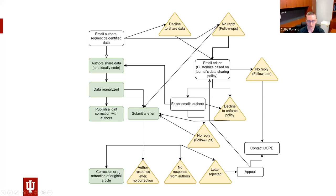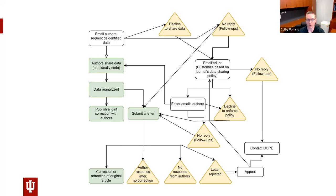Often we run up against barriers. There may be an author response to our letter, but the journal declines to correct the original article. This is not ideal because letters are sometimes but not always linked to the original article. And even if they are linked, it's just a generic note saying there's a letter to the editor — it doesn't tell you anything about the severity or content of that letter. Unless a reader is really digging in and looking for these post-publication comments, they're really difficult to find.